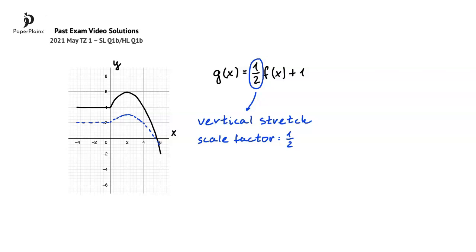The other transformation is shown by this plus 1, and it represents a vertical translation by 1 unit up. Therefore, the blue graph that we have drawn will move up by 1 unit, so the final answer to this question looks like this.